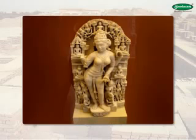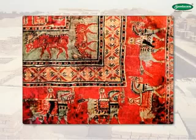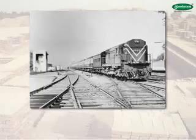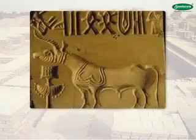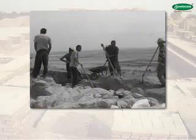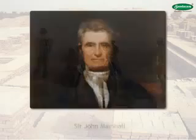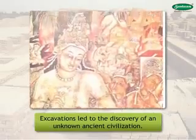An accidental discovery shed light on an unknown Indian civilization and pushed back the history of ancient India by several centuries. In 1920 AD, during the laying of tracks of the Lahore-Multan railway line, workers found some ancient bricks. The archaeological department took interest in these findings and sent a team under the guidance of Sir John Marshall to conduct excavations.